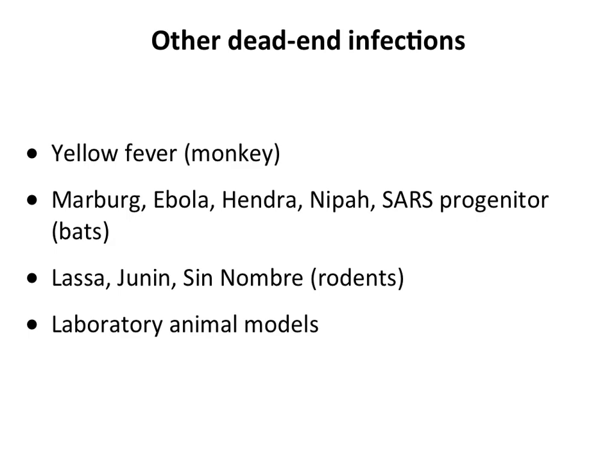Other dead-end infections include yellow fever when picked up by a monkey and transmitted to people, and a number of viruses from bats — Marburg, Ebola, Hendra, Nipah, and the SARS progenitor. These go from bats into people; we can get very sick but generally don't spread the virus further. Lassa virus and Sin Nombre hantavirus — spread from rodents to people — are also dead-end infections. Laboratory animal models are also typically dead-end infections; we infect mice or hamsters but serial transmission is very difficult.